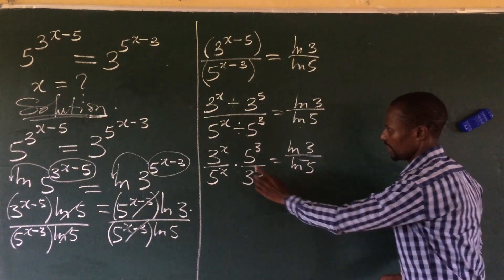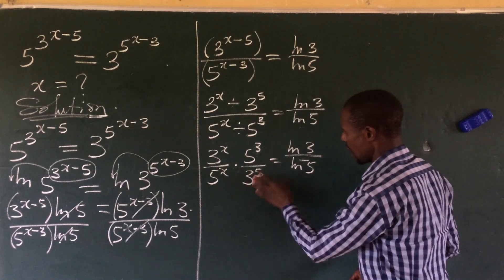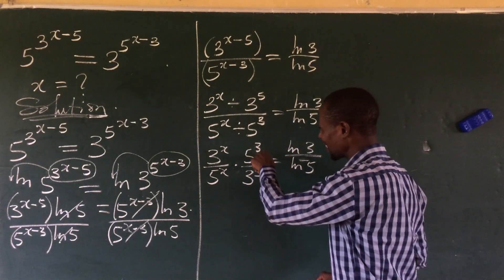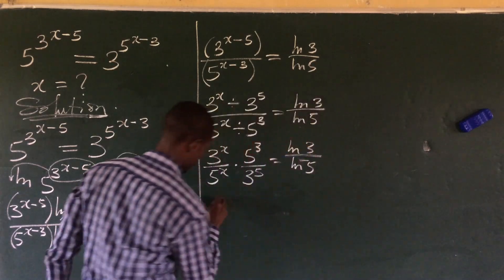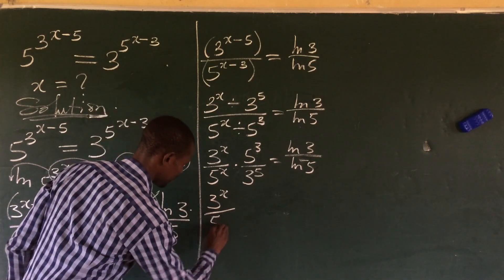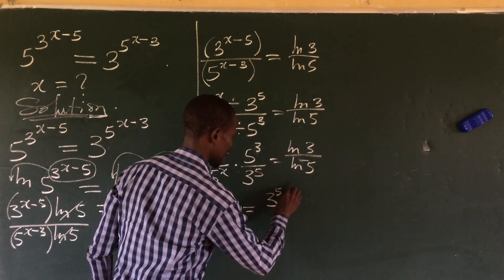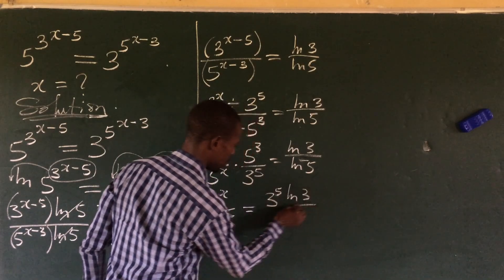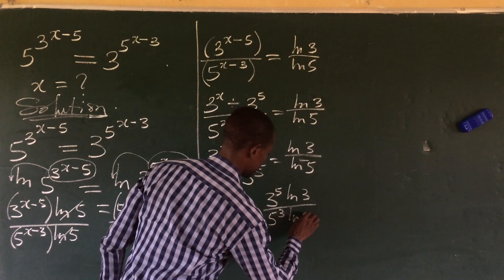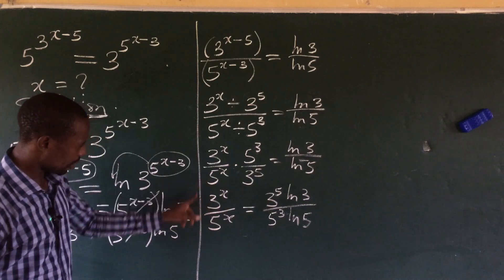We want the expression with x alone on the left-hand side. So we multiply both sides by 3 to the power of 5 and divide both sides by 5 to the power of 3. This gives us: 3 to the power of x over 5 to the power of x, equal to 3 to the power of 5 times ln of 3, all over 5 to the power of 3 times ln of 5.